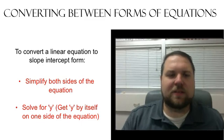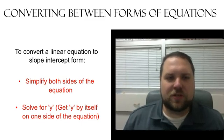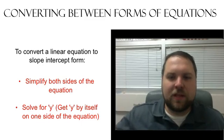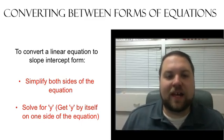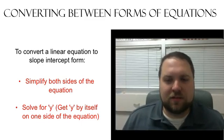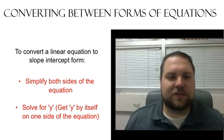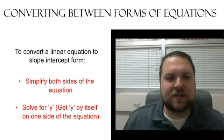So here's what we do. If we're going to convert an equation to slope-intercept form, first thing we have to do is simplify both sides of the equation. Remember, an equation is two expressions set equal to each other, so we're going to simplify both of those expressions.